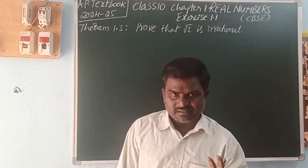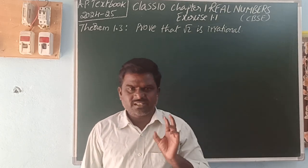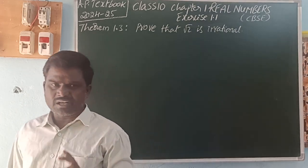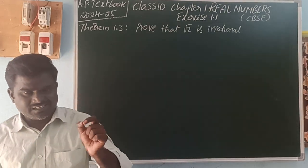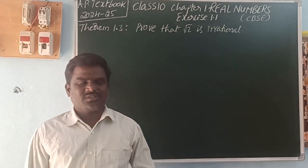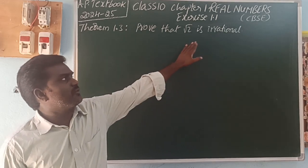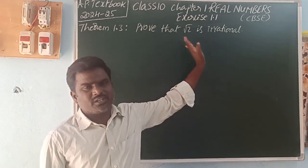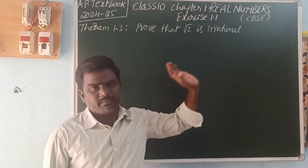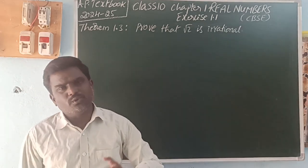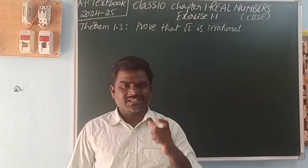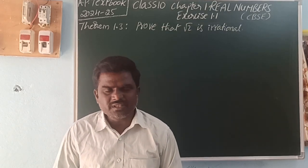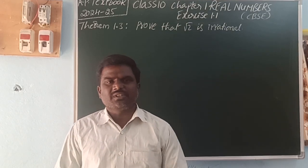So here, in the real number system, there are only two types of numbers. What are they? Rational and irrational. So, to prove that root 2 is an irrational number — how can we prove it? By using the contradiction method.